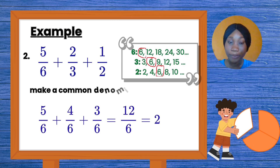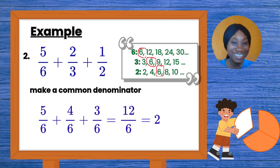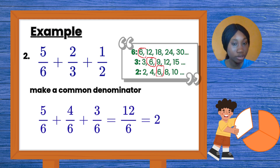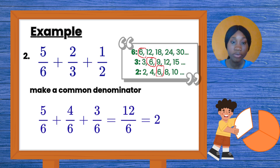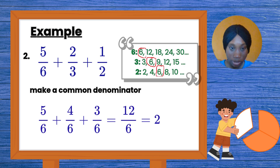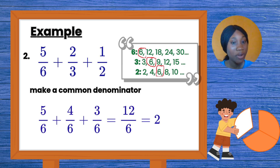Let's look at another example — I'm working with three fractions just to dare and challenge myself. I have five over six plus two over three plus one over two. Do not panic! Just remember step one: write out the multiplication tables of those three numbers — six, three, and two. The multiplication of six goes six, twelve, eighteen... up to seventy-two. The multiplication of three goes three, six, nine... up to thirty-six. The multiplication of two goes two, four, six... up to twenty-four.